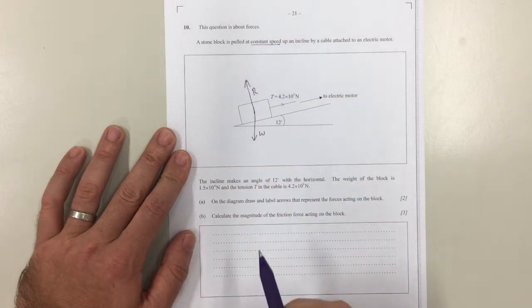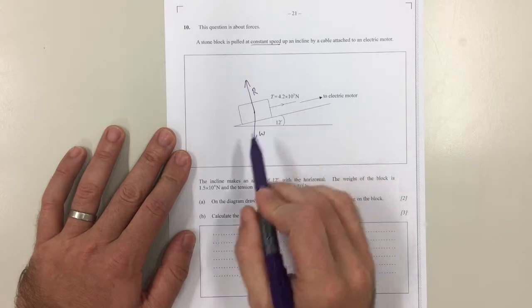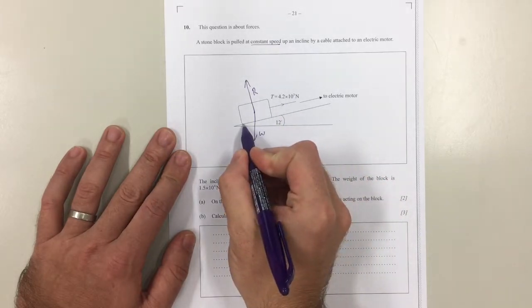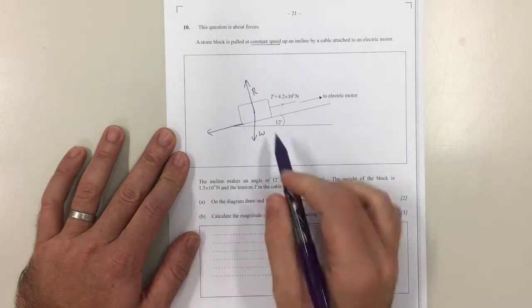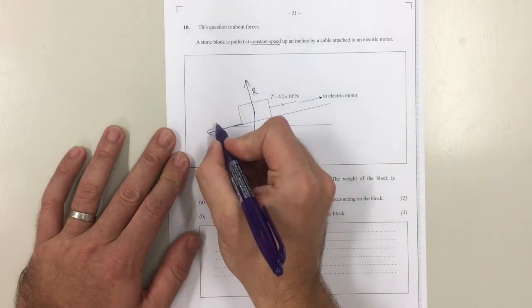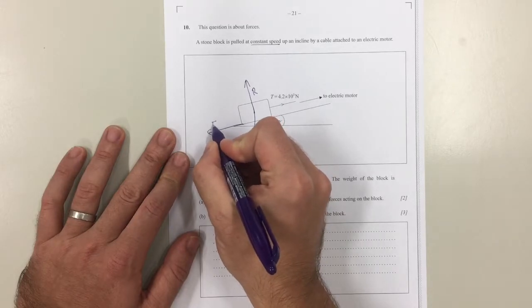And then the final force that is acting, one of them is already labeled for you, the tension, so the final force that is acting is friction. Now friction acts between two surfaces, so it acts along the slope there and that can be friction.